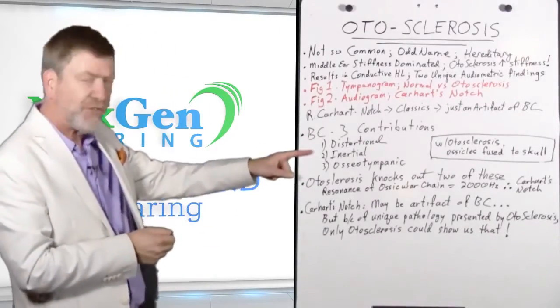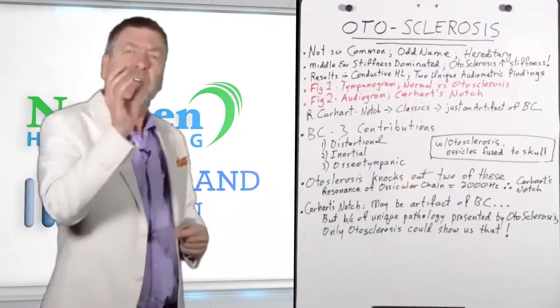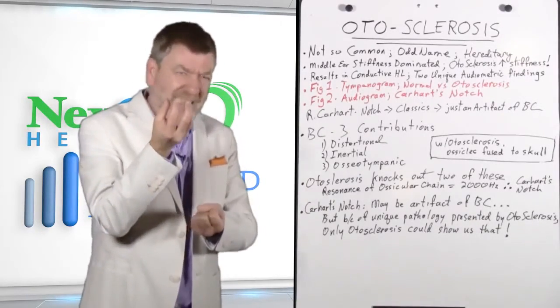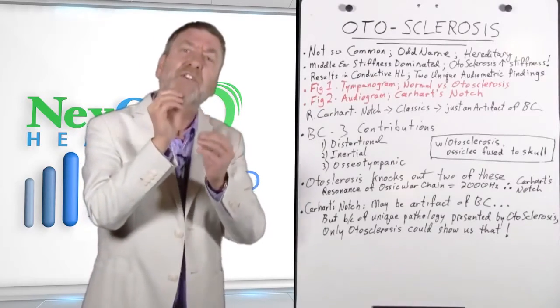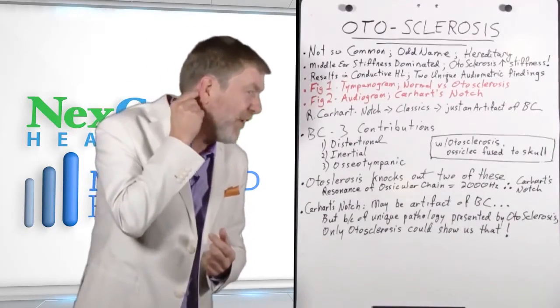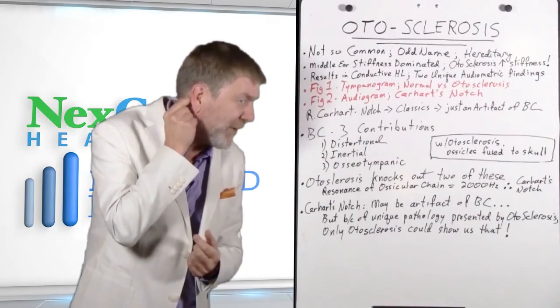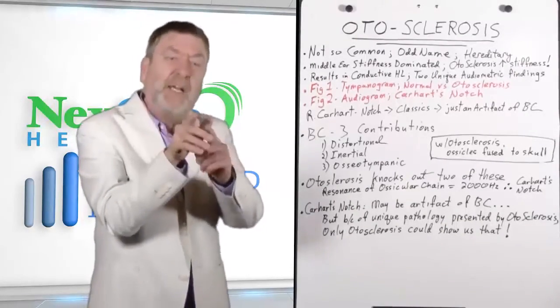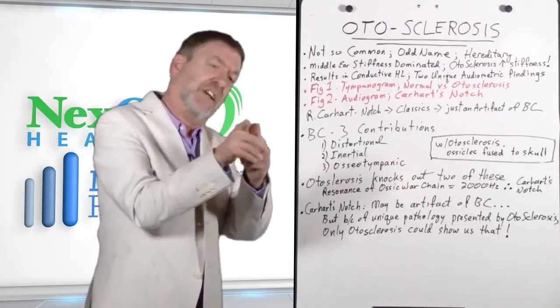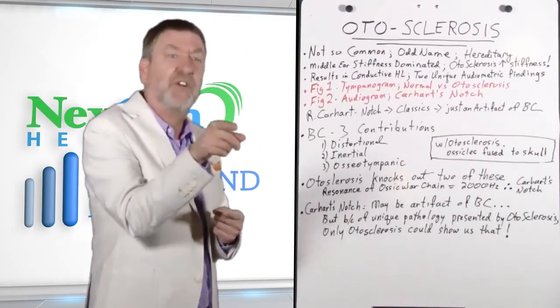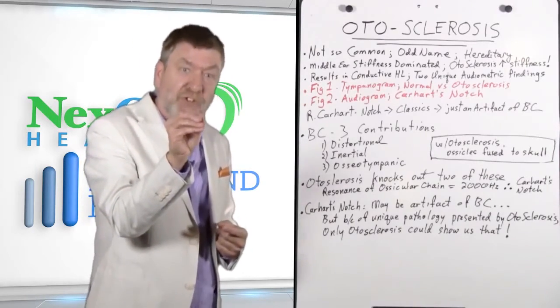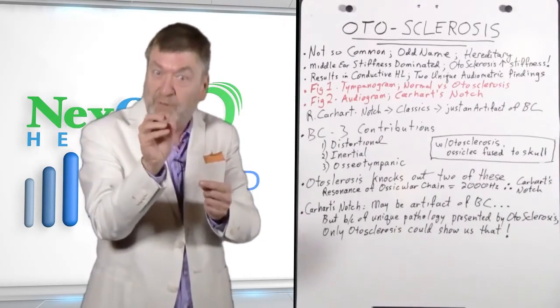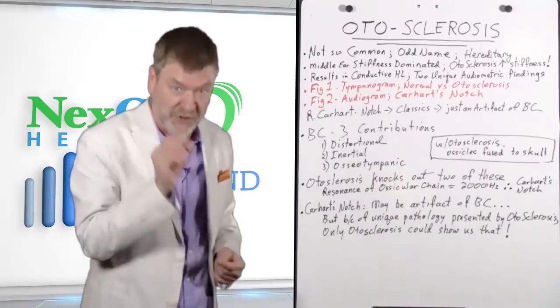But there's two others, inertial and osseotympanic. Think of inertial, first of all. The middle ear ossicles, as we said earlier, are not attached directly to the skull. They are attached by ligaments. And so when you're vibrating the skull with a mastoid oscillator, the ossicular chain not being formally totally fused to the skull, it's going to lag a little bit behind with inertia. And this inertial lag is going to cause the middle ear ossicles to push slightly in and out of the oval window. The stapes, pushing the stapes in and out of the oval window of the cochlea, thus improving bone conduction a little bit.